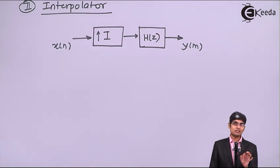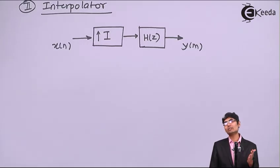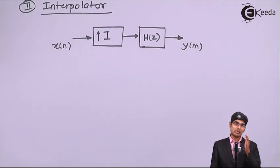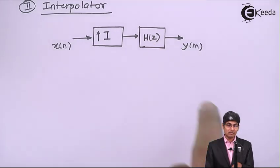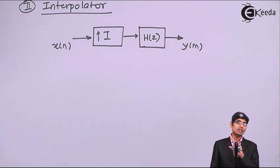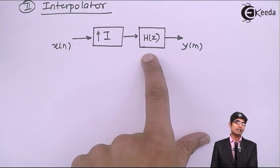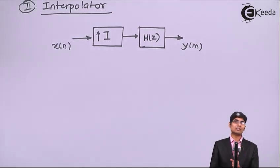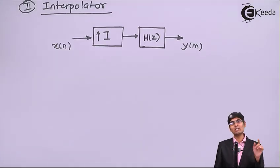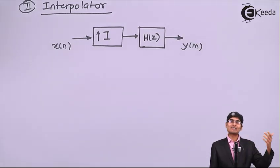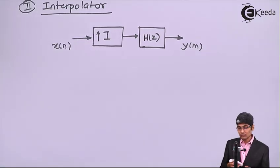In an interpolator we normally insert I minus one zeros, so non-zero multiplications only occur at integer multiples of I. Why waste time computing zero-valued samples? Working at a higher data rate means more samples and the convolution takes more time, because the window is being shifted at a very high sampling rate. It is unnecessary — we are wasting time computing zeros. Can we interchange? Yes, but we need to use the polyphase approach.